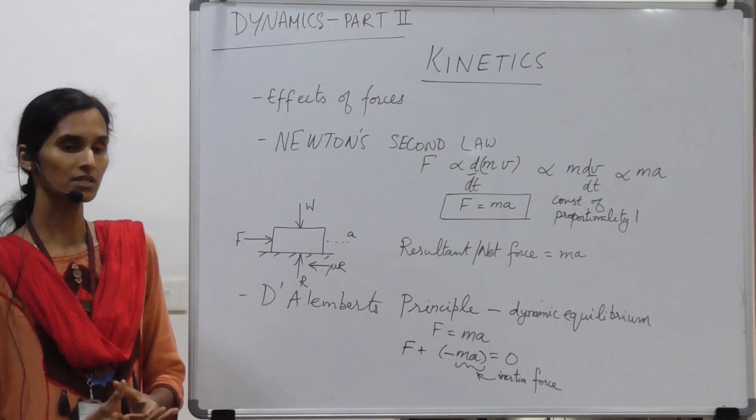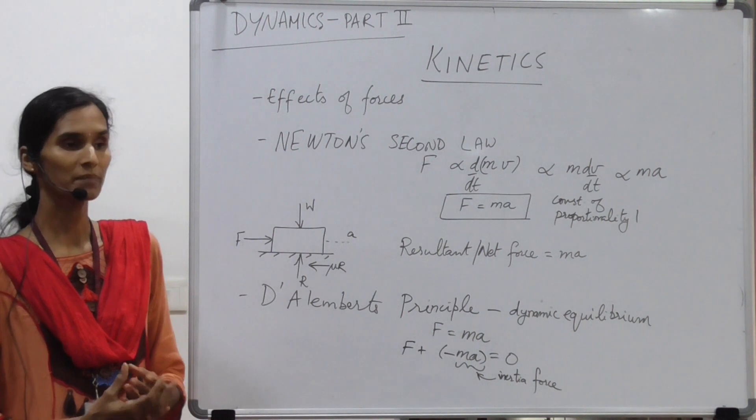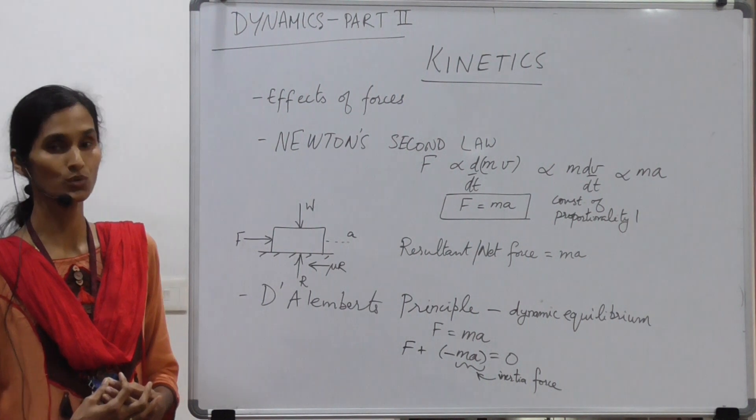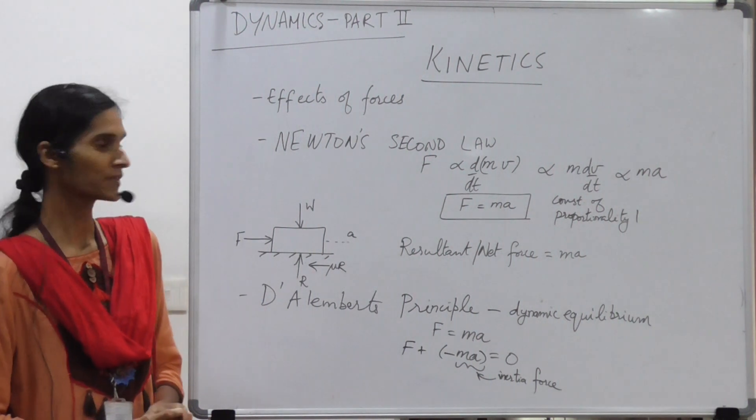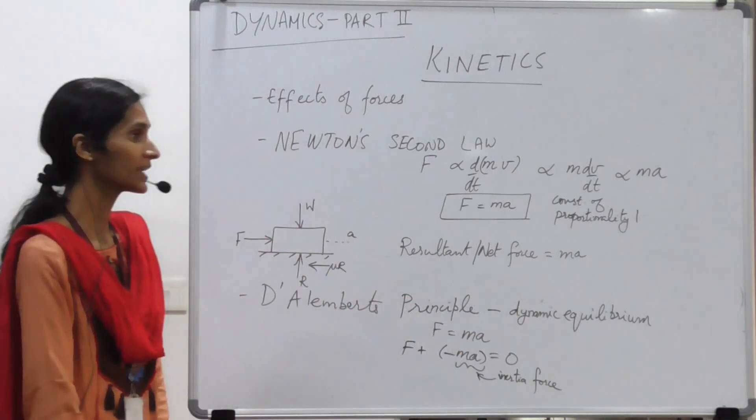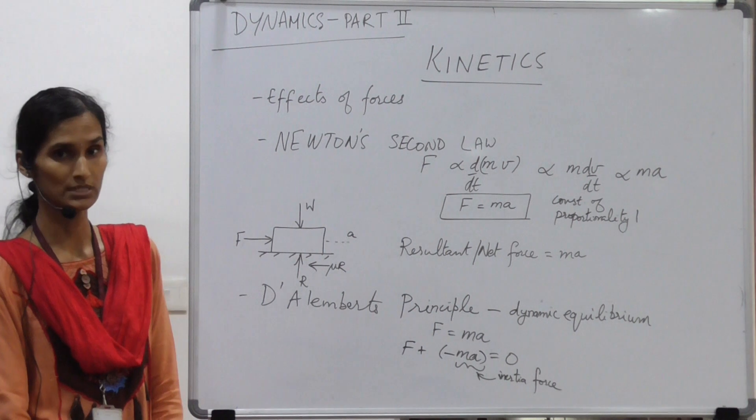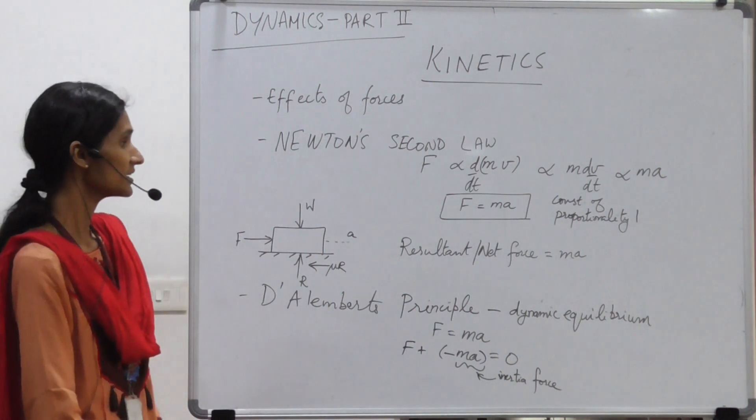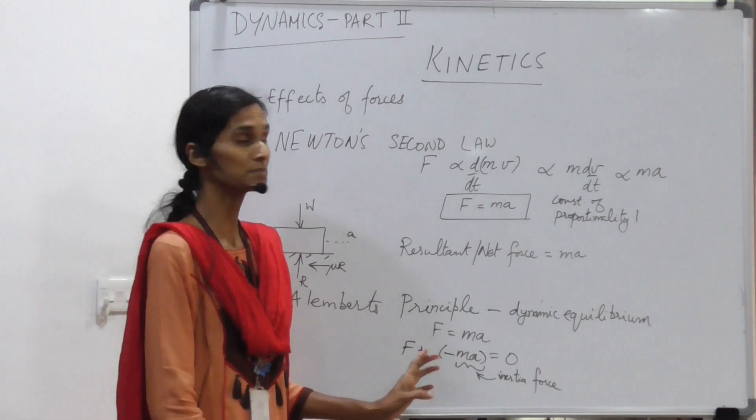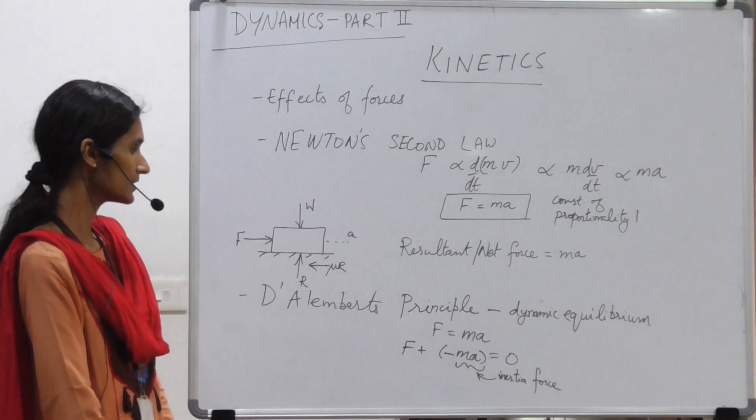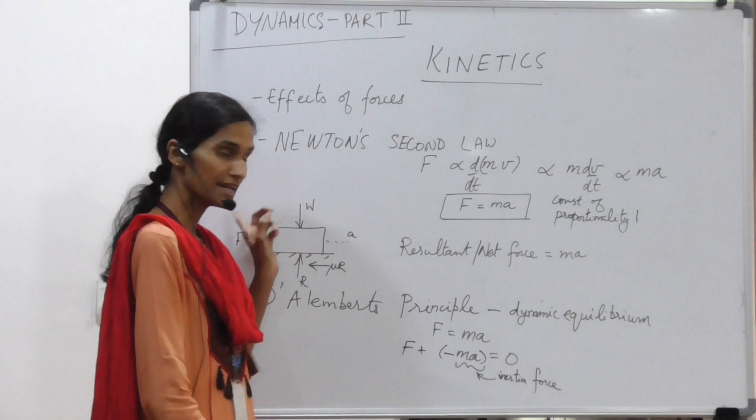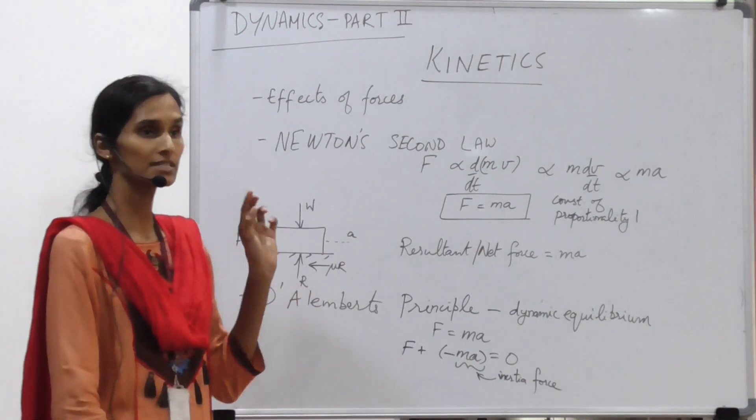We can say that any body resists the motion by virtue of its mass and this force can be referred to as inertia, as an inertial force. This ma on the right-hand side of the equation can be considered as such an inertia force and it can be rewritten in the form F equals ma as F plus minus ma equals 0.